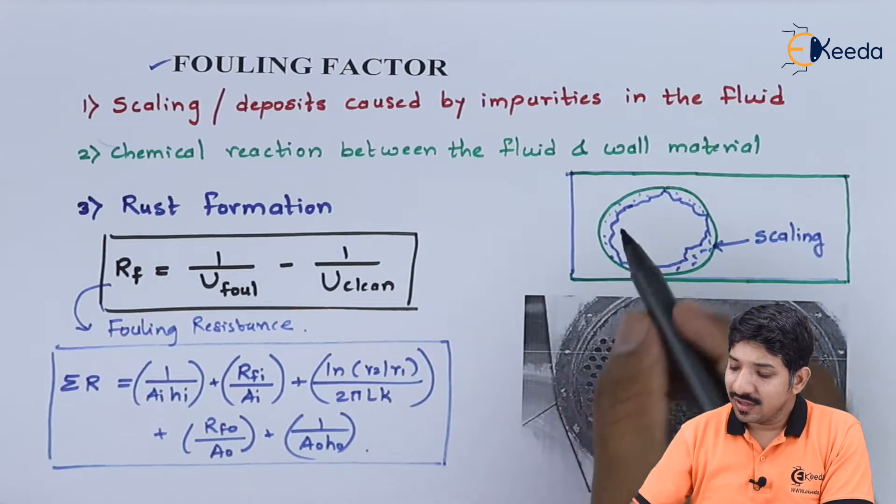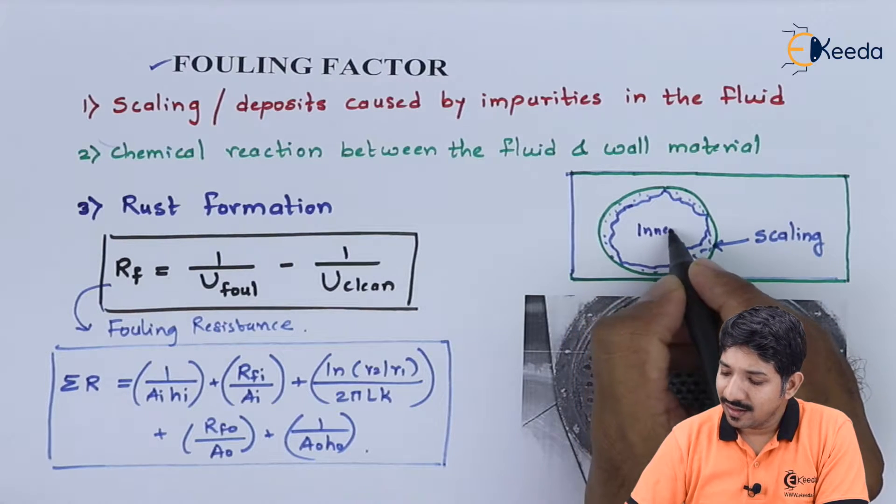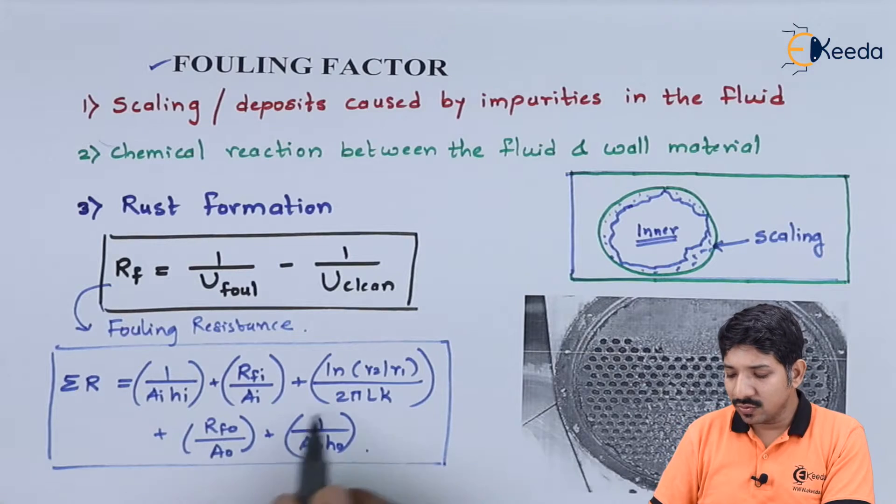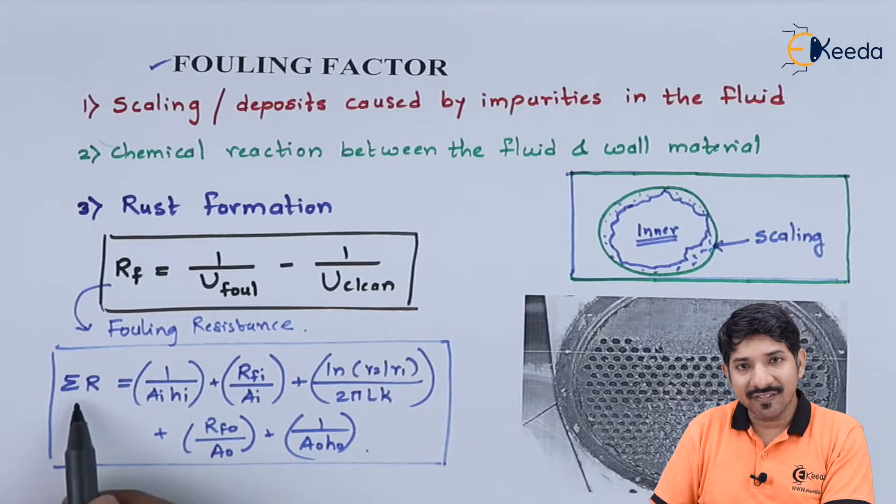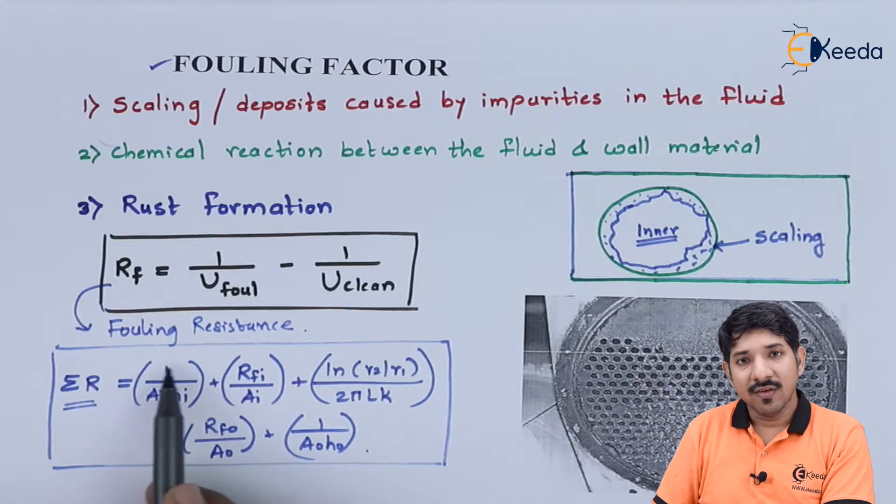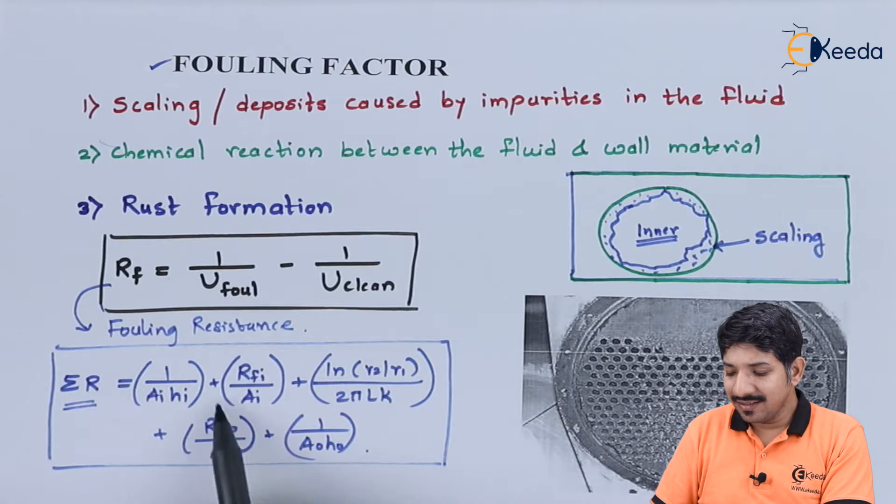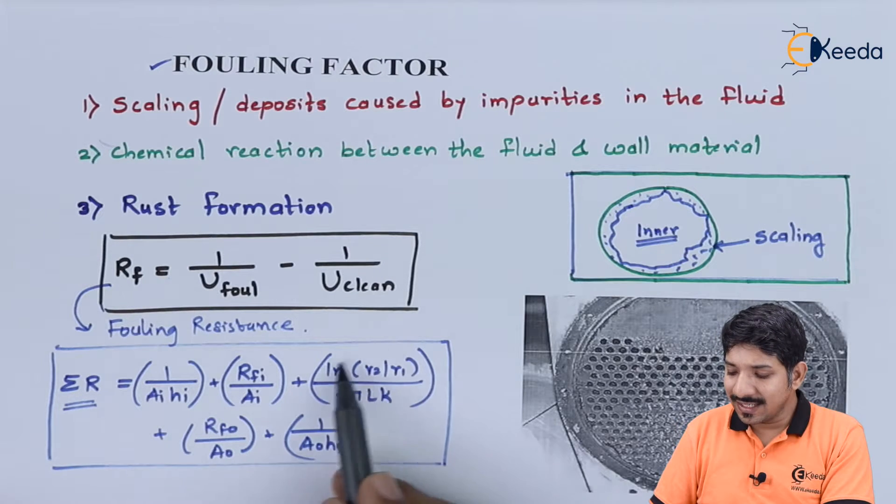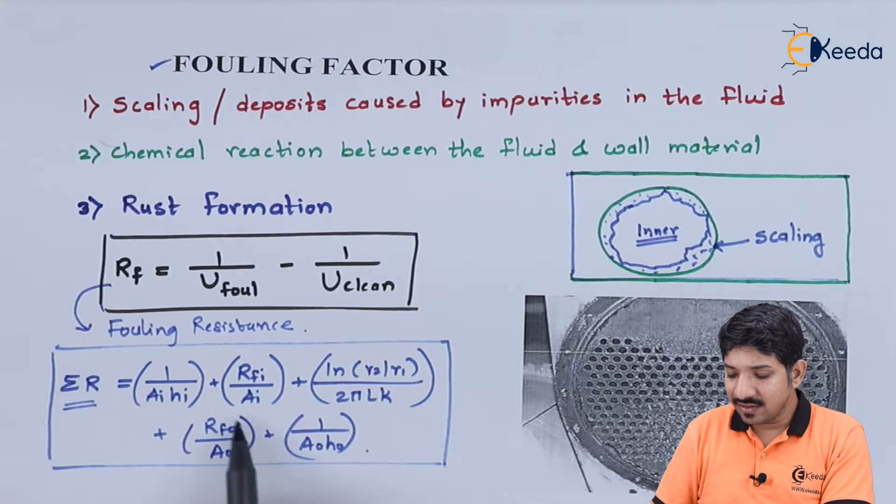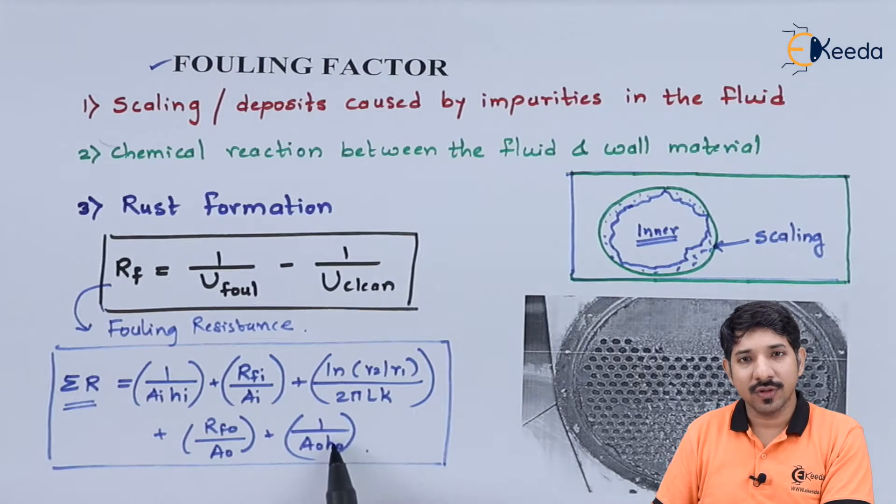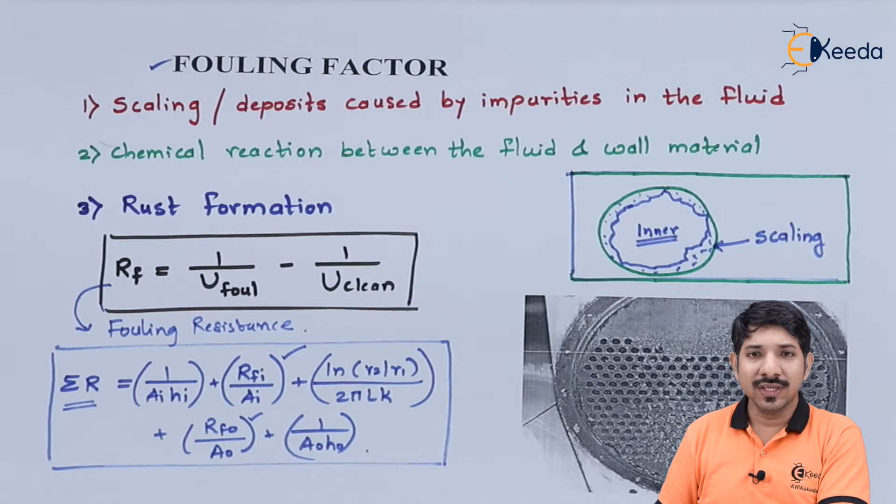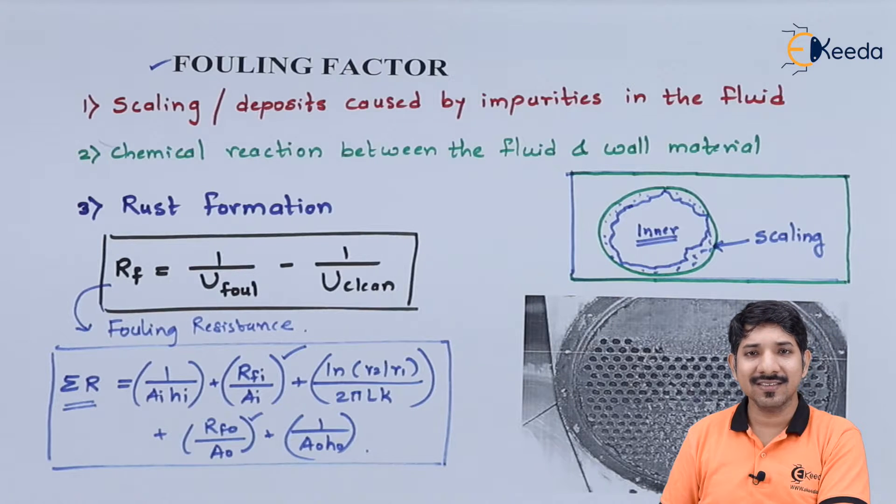If scaling occurs on both sides—the inner side of the pipe as well as the outer side—we will have to consider RFI and RFO, which need to be added to the overall resistance. The total resistance is given as 1/(AI × HI) plus the fouling resistance by the inner side, plus the conductive resistance of the wall material, then the fouling resistance of the outer side, and the convective resistance of the outer fluid. Due to increased resistance, the heat transfer rate will decrease.